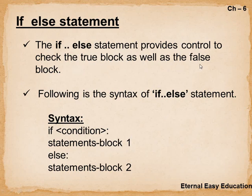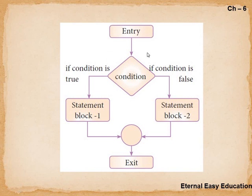The if-else statement provides control to check both the true block and the false block. If the given condition is true, statement block one is executed; if the condition is false, it will execute statement block two, which is under else. So we can have two types of output based on one condition. In the flowchart, if the condition is true, statement block one is executed; if false, it moves to statement block two.